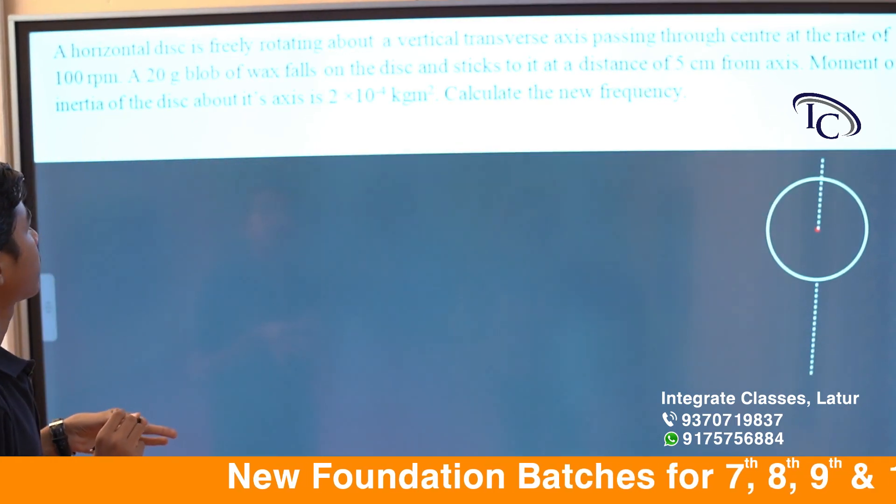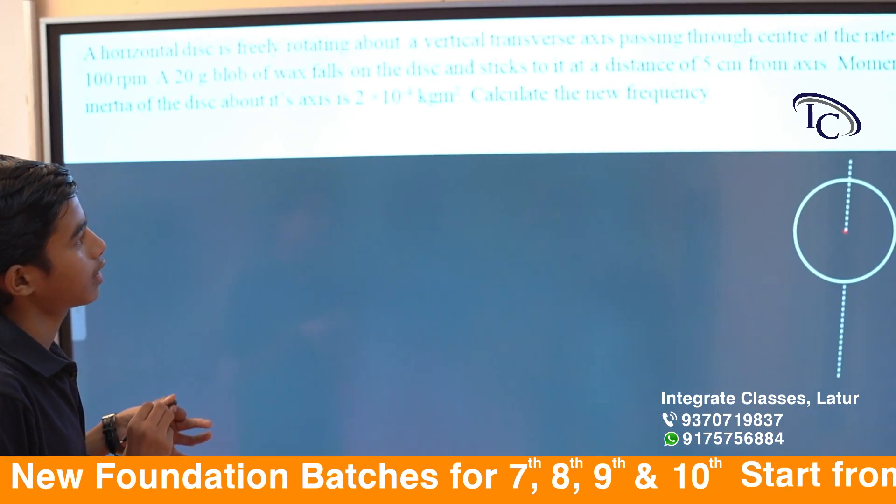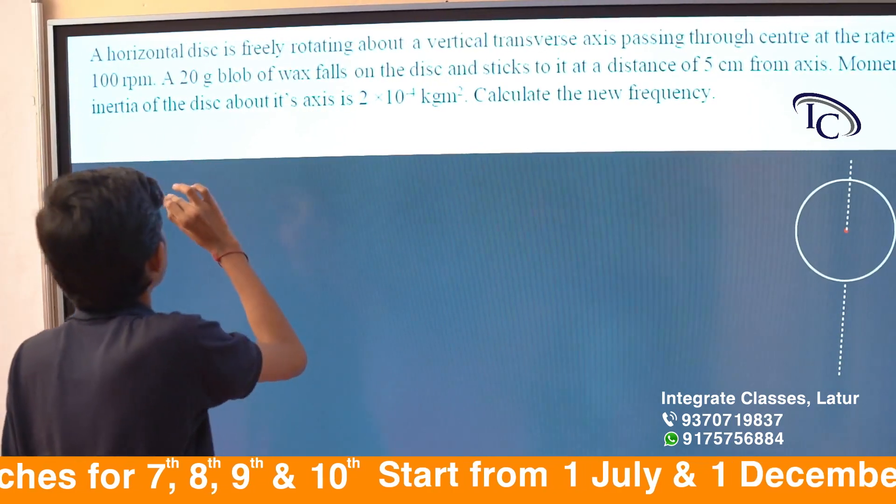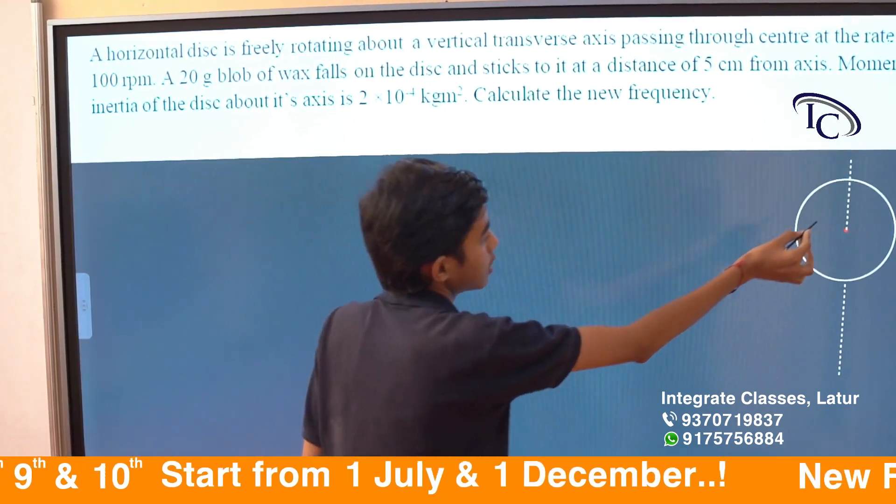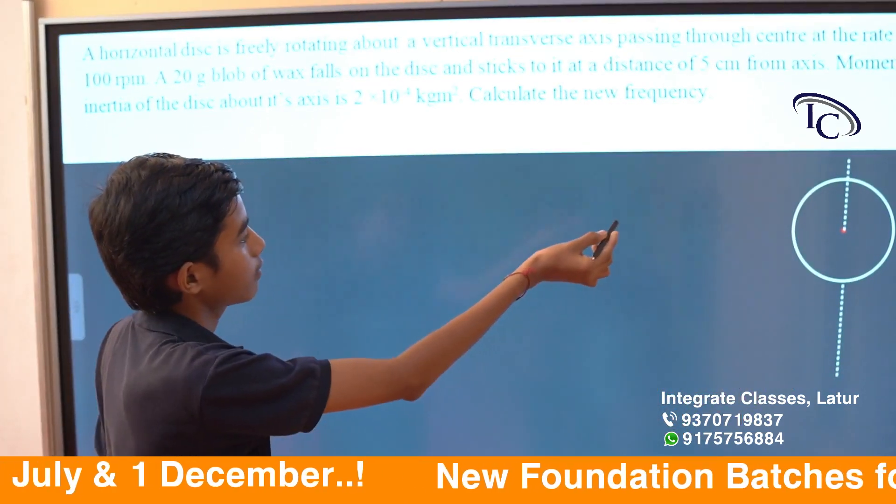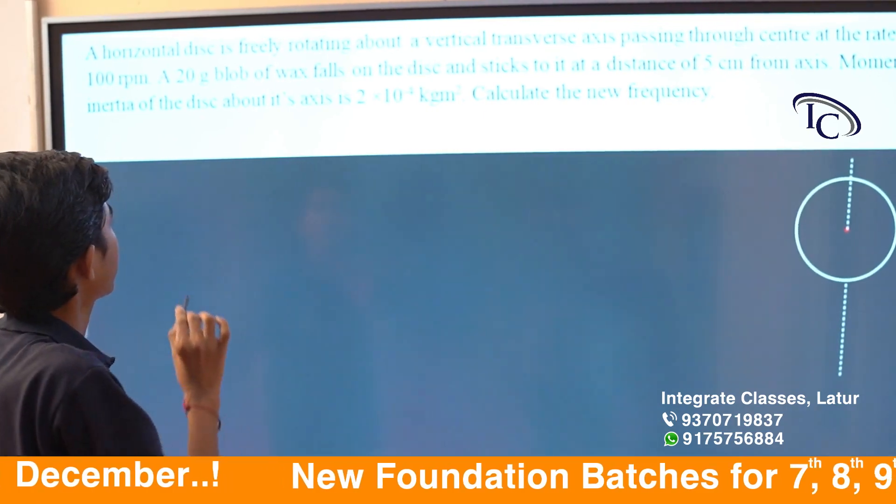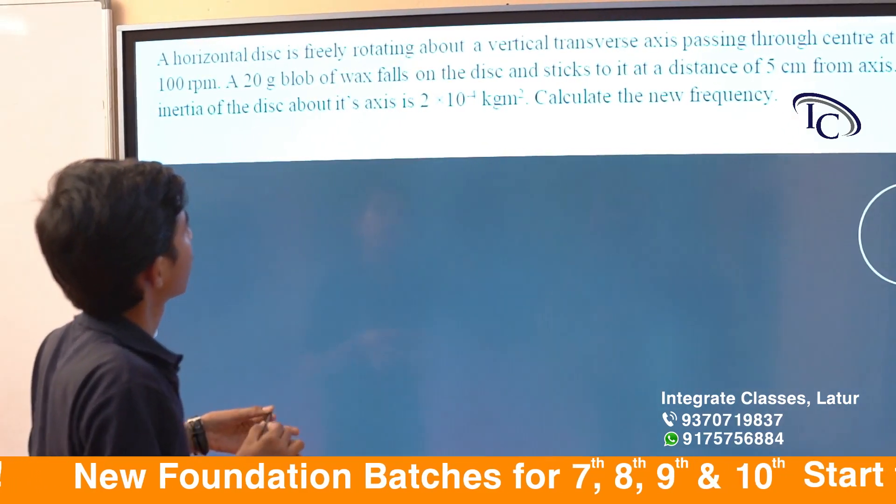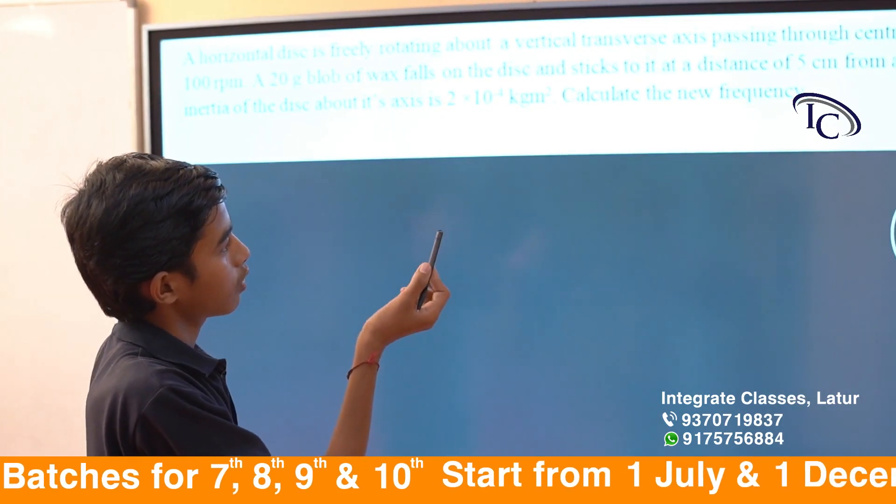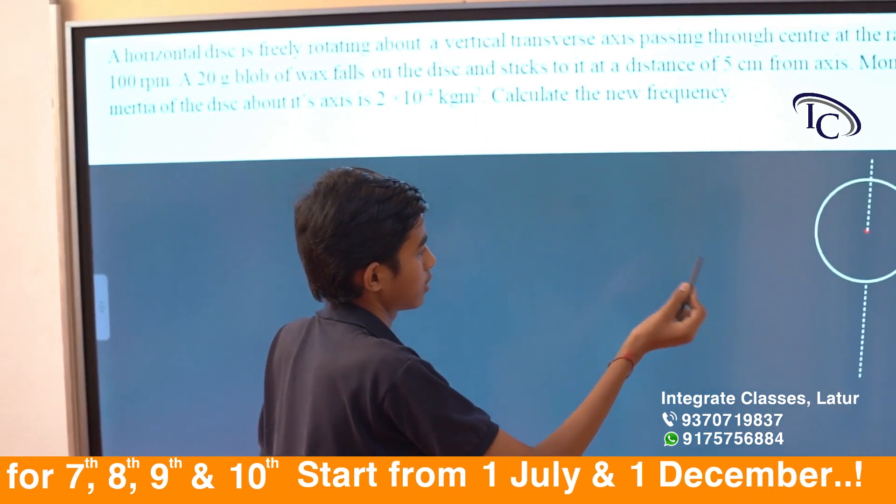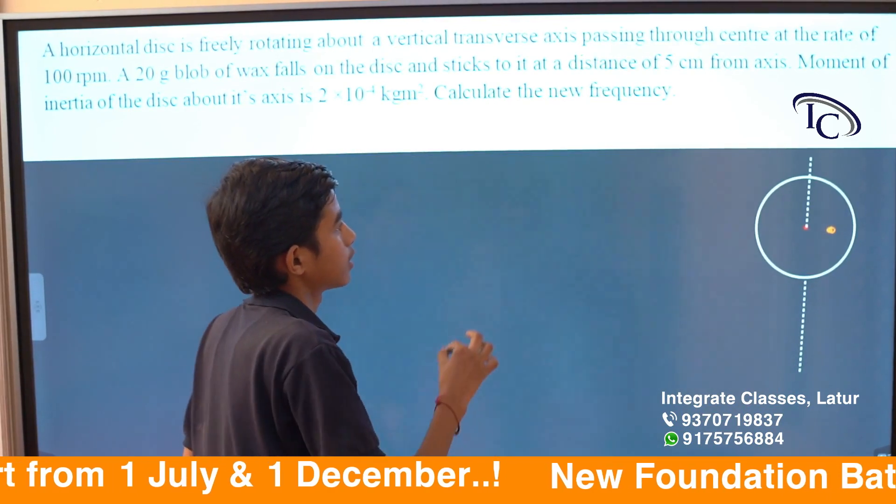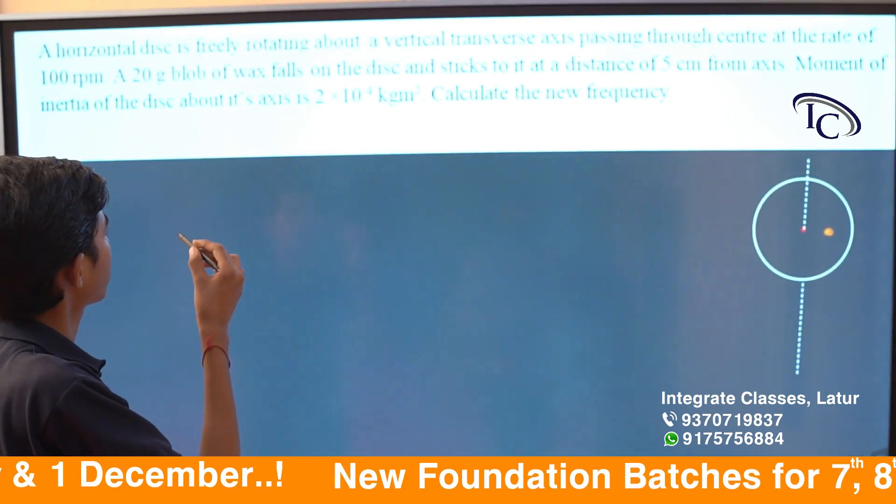A horizontal disc is freely rotating about a vertical transverse axis passing through its center at the rate of 100 revolutions per minute. A 20g blob of wax falls on the disc and sticks to it at a distance of 5 cm from its axis. Moment of inertia of the disc about its axis is 2×10^-4 kg·m².